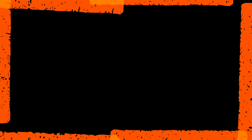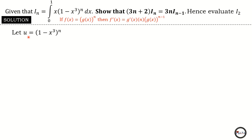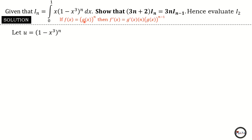To differentiate u: if f(x) equals g(x) raised to the power n, differentiating gives g prime of x times n times g(x) raised to the power n minus one. Another principle is that differentiating x raised to the power n gives n times x raised to the power n minus one. In this case g(x) is (1 minus x cubed), so to get g prime of x I differentiate one — a constant giving zero — then I differentiate negative x cubed using that principle.